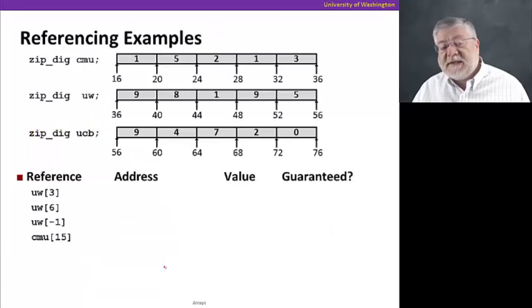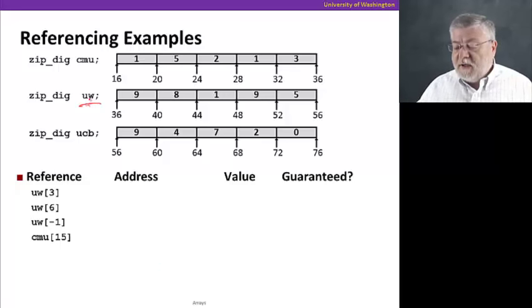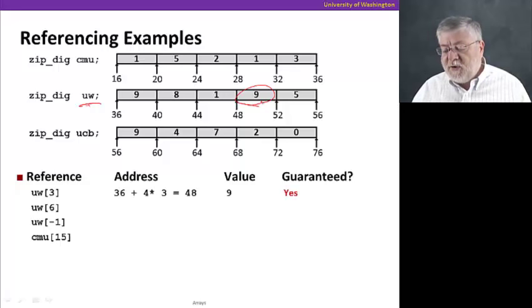Let's take a look at some other examples of accessing these arrays. Let's take a look at UW sub three. What would we expect that to be? We expect to go to the UW array here. The sub three means the fourth element. So it's not the nine, not the eight, not the one, but it's the second nine at address 48. In fact, we can compute that by taking the starting address of the array, 36, and adding four times three, the size of an int times the index. The value there is nine, and that is guaranteed to be that value in terms of its organization in memory.